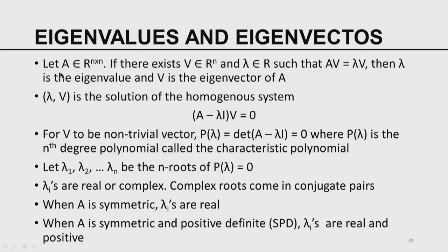Let A be an n-by-n real matrix. If there exists a vector v belonging to Rⁿ and a constant lambda — a real or complex constant — such that Av equals lambda v, then lambda is called an eigenvalue and v is called an eigenvector of A. From the definition, it follows that the pair (lambda, v) is the solution of a homogeneous system obtained from Av equals lambda v.